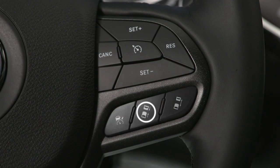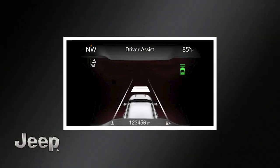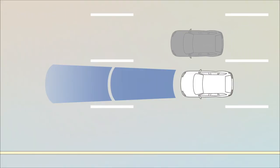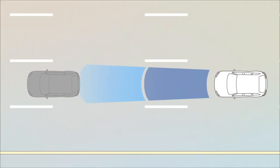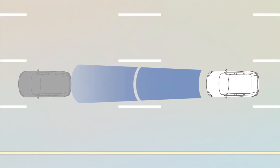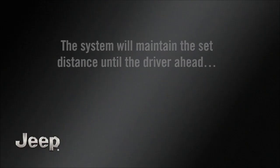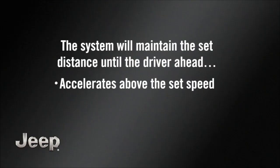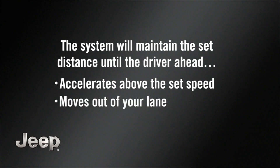The increase and decrease distance buttons let you change the distance between you and the driver in front of you. If there's no driver ahead, your set speed will be unaffected. But when a slower-moving driver enters your lane, the system automatically adjusts your speed to maintain the distance setting. You'll see the sensed vehicle indicator icon in the instrument cluster. The system will maintain the set distance until the driver ahead accelerates above the set speed or moves out of your lane, or until the system is manually disengaged.